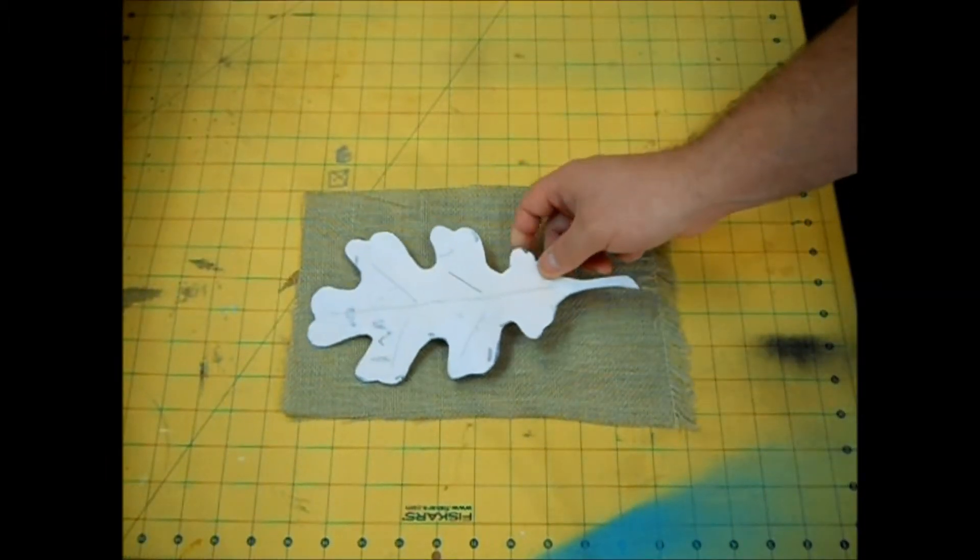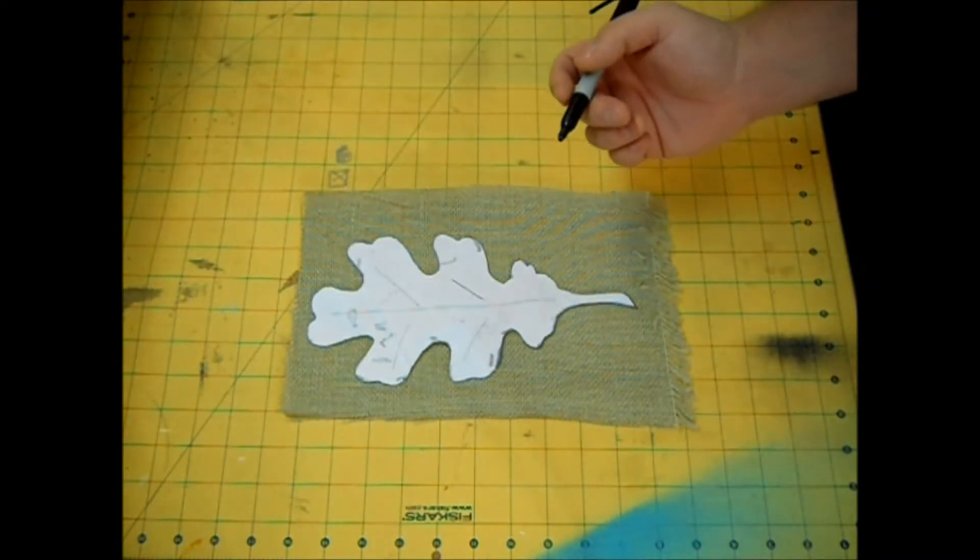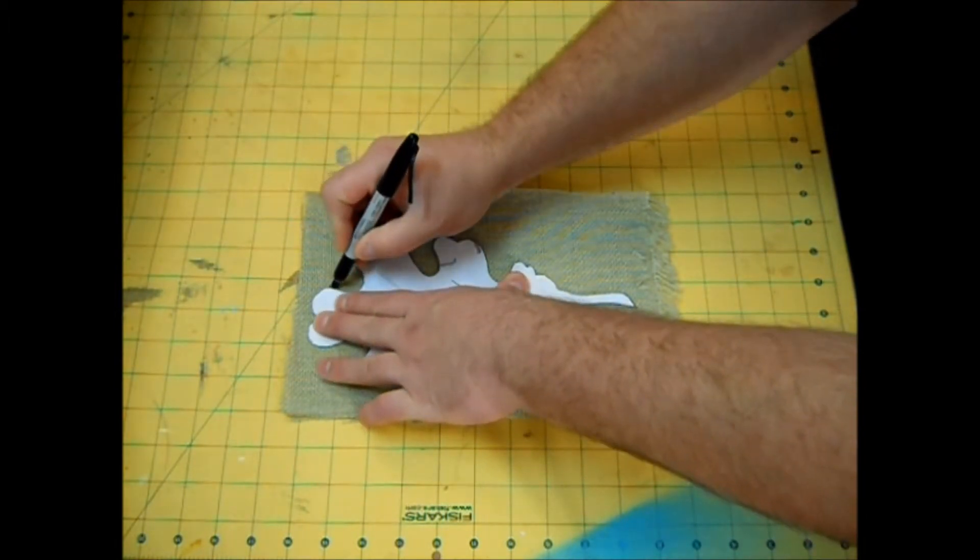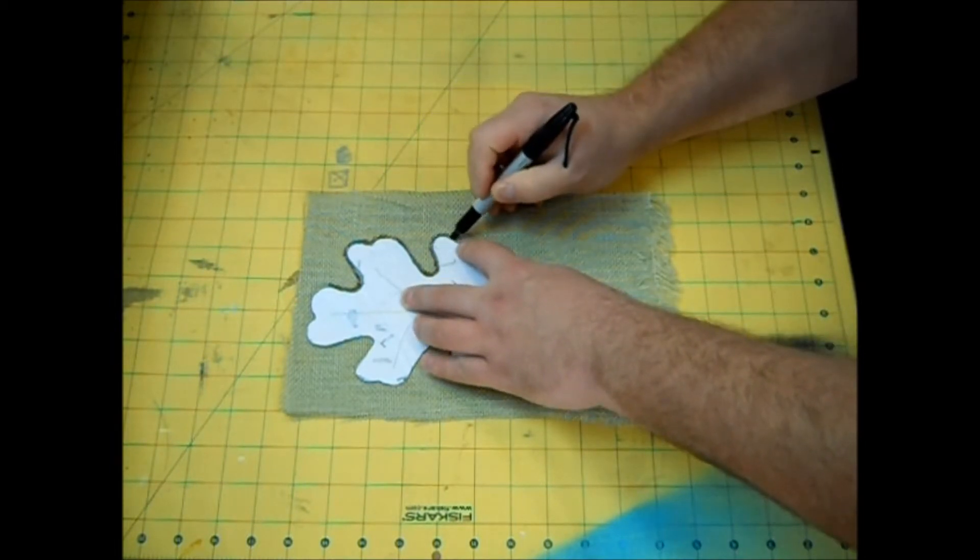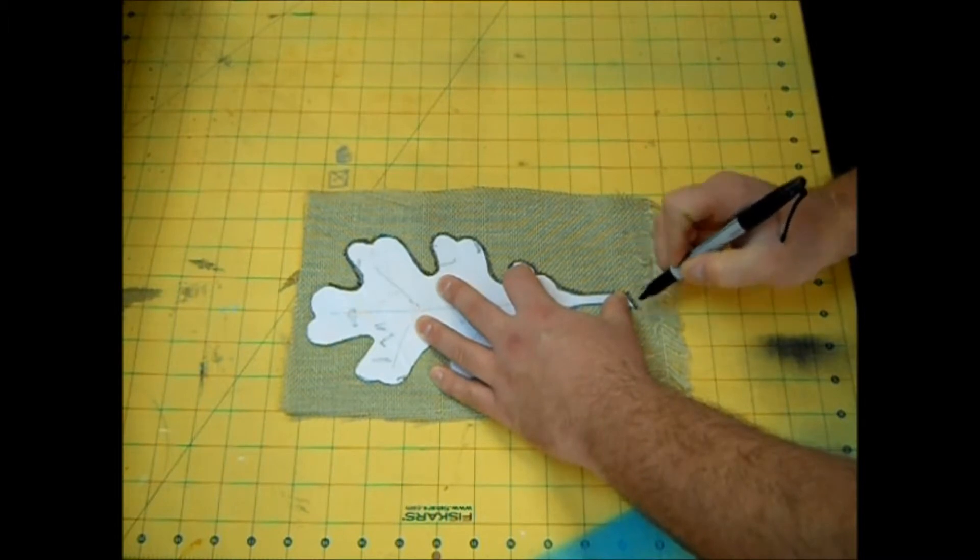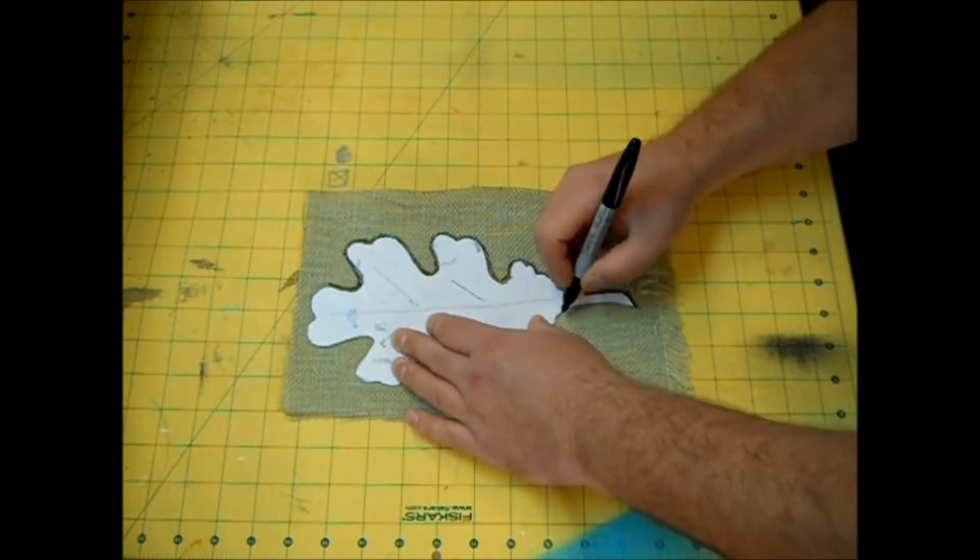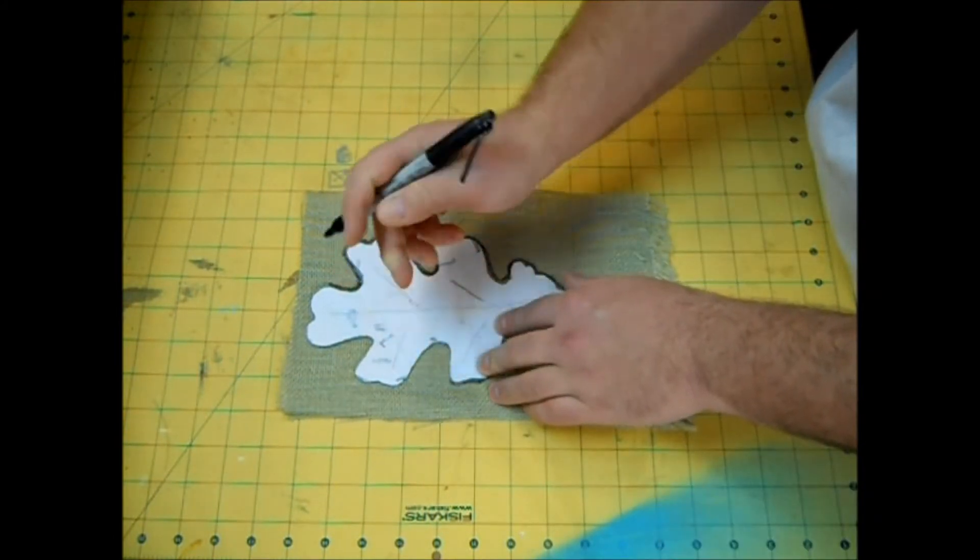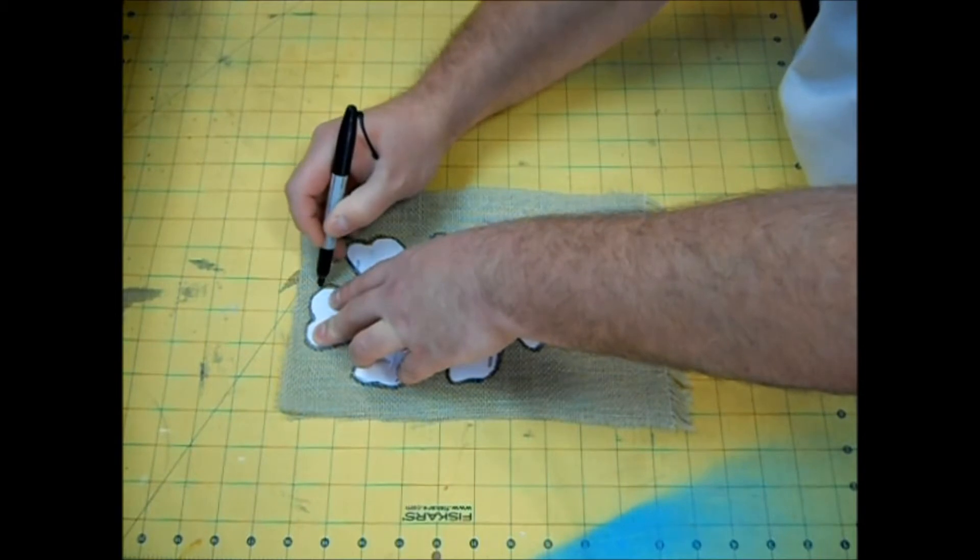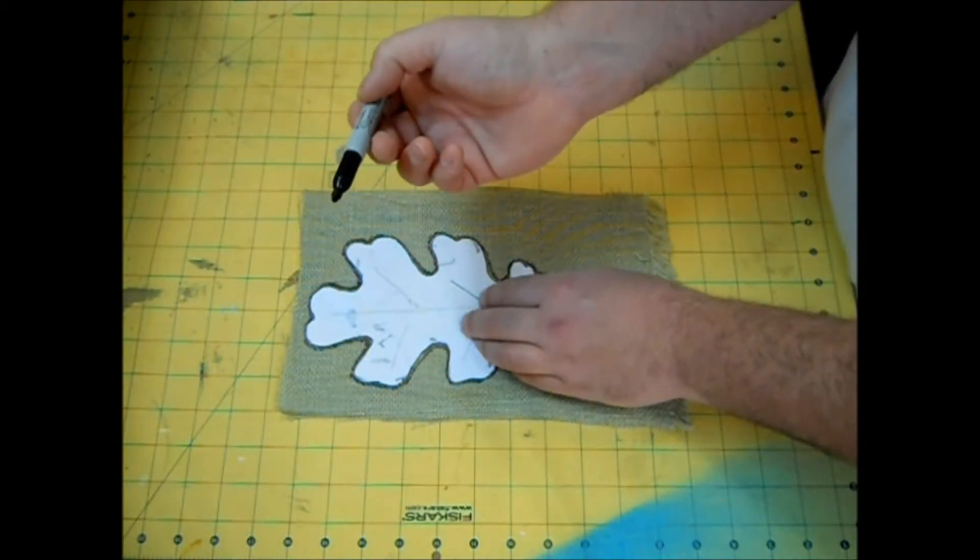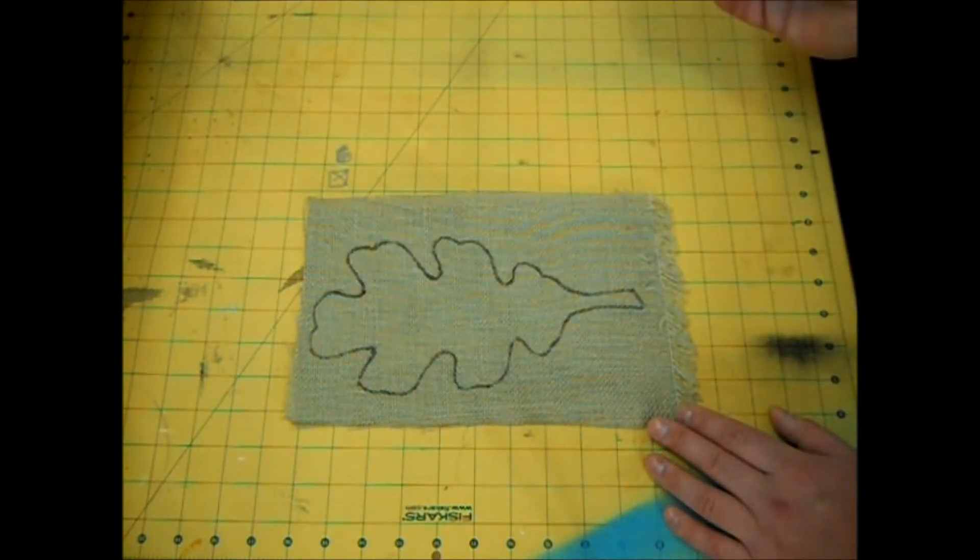The first step you're going to want to do is to take your burlap and your leaf template and carefully trace around it with your sharpie. You want to be really careful down around the stem to make sure that your burlap isn't moving too much. Now this does do a number on the point of your sharpie, so I suggest using an older one. And there you have it!